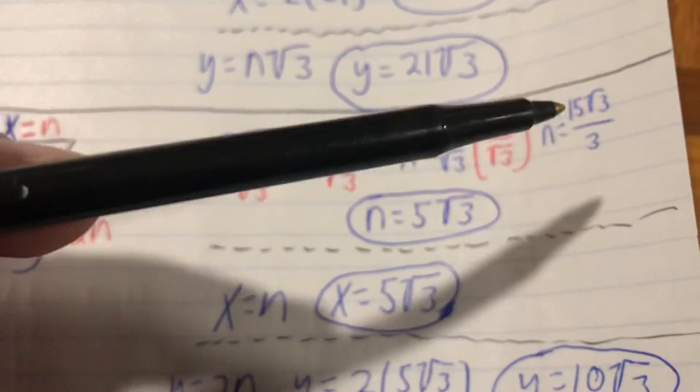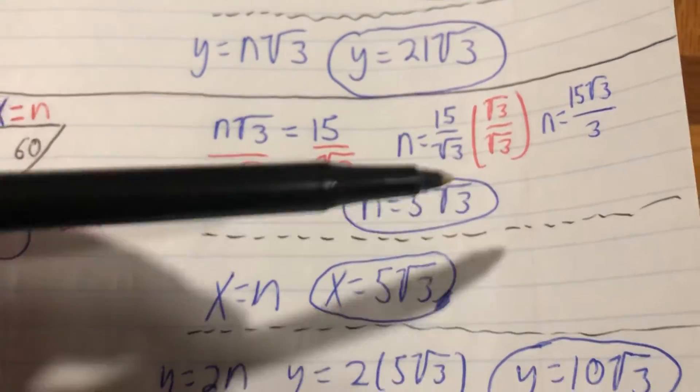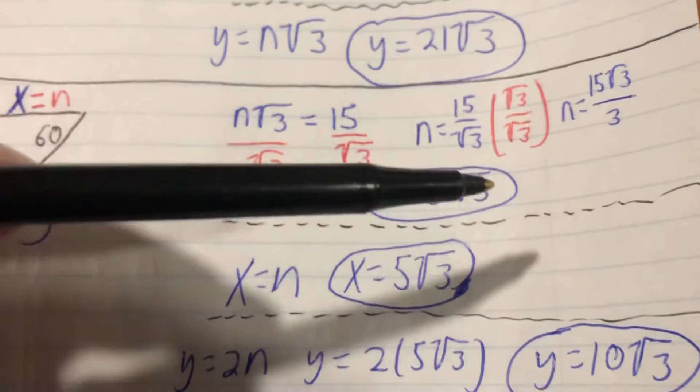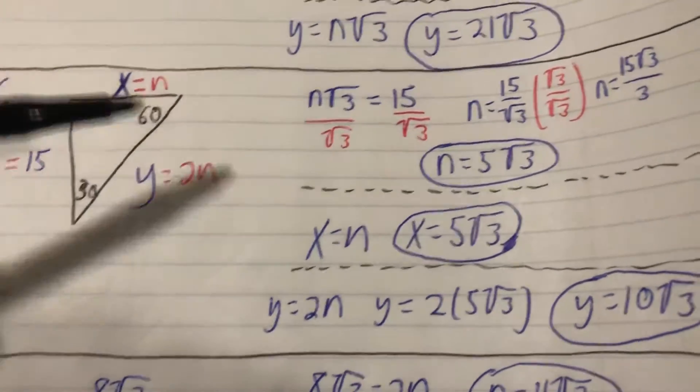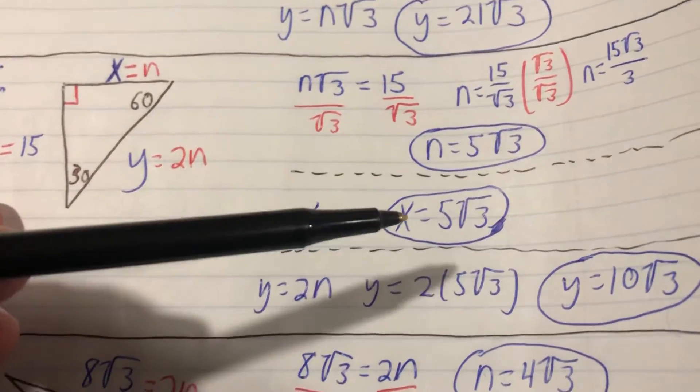Because 15 divided by 3 equals 5, so we have 5√3 for our answer, and there's nothing that can be simplified in that radical—we're good there. So now we have the value of n, that's going to make the rest pretty easy. x equals n, so work's done there—x is equal to 5√3.